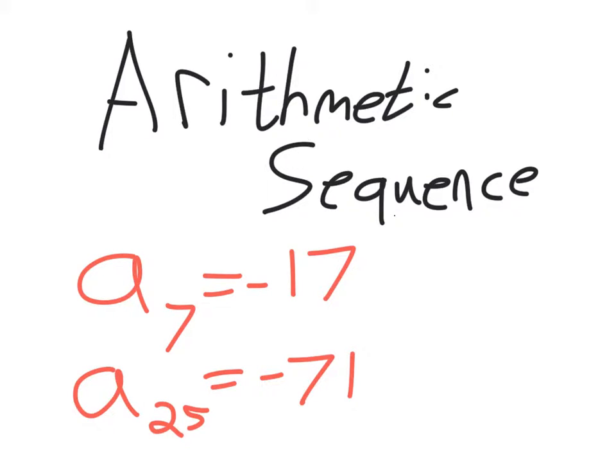If you're told the 7th term of an arithmetic sequence is negative 17, that means 1, 2, 3, 4, 5, 6, the 7th term is negative 17.